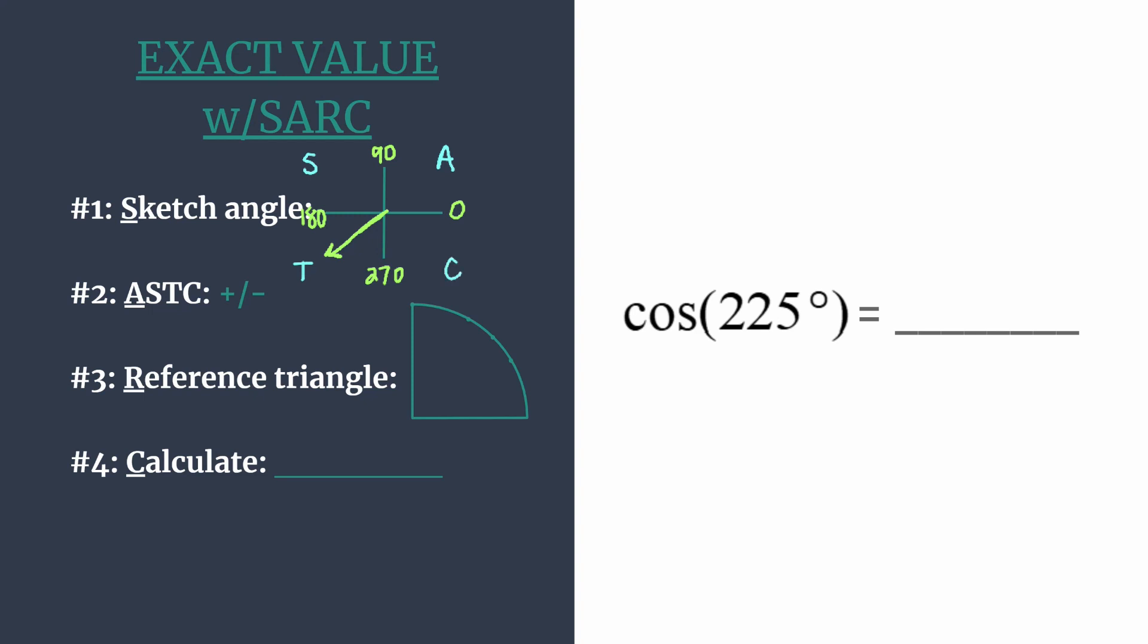But let's focus on quadrant three, that's where we are. So only tangent and cotangent are going to be positive here. We can make a note—our answer should be negative. And let's go ahead and mark it in our final answer space as well.